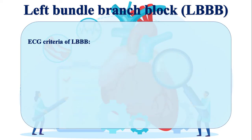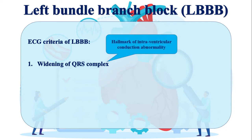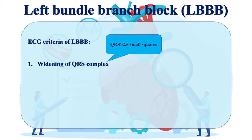There are three major electrocardiographic criteria for diagnosing LBBB. The first one is widening of the QRS complex. Remember that the hallmark of any intraventricular conduction system abnormality is QRS widening. A broad QRS complex is defined as a QRS duration equal to or greater than 2.5 small boxes.